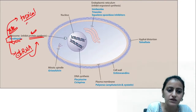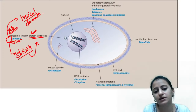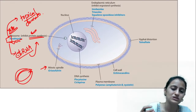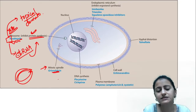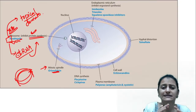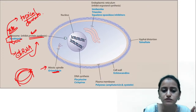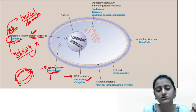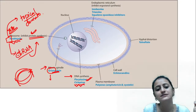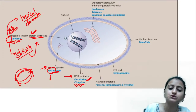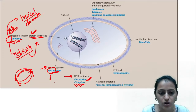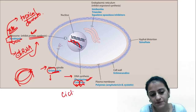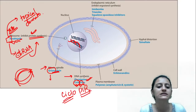Tolnaftate is the drug used topically for dermatophytosis. Which drug acts on the mitotic spindle? It is griseofulvin — remember, a spindle moves like grease, smoothly allowing cell division. Griseofulvin acts on the mitotic spindle. Cyclopirox also inhibits your DNA synthesis — it is like a cyclic molecule acting on pyrimidine and inhibiting DNA synthesis.